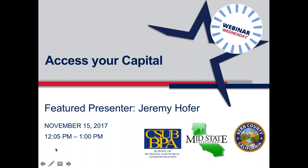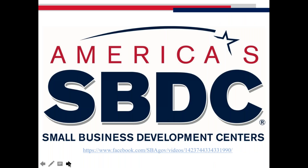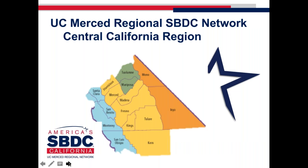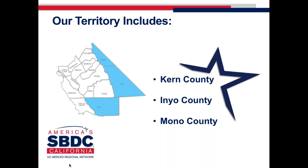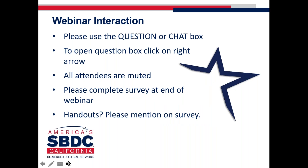A little bit of information before we get to our presentation: the SBDC program is in all 50 states, over a thousand centers strong. In California we have six different regions, and our region is the central California region that provides service to 14 counties from the south part of Kern County to the northern part of Mono, east to the Nevada border, west to the Pacific Ocean. If you're in one of those counties today, welcome. Our territory here at the CSU Bakersfield Center includes Kern, Inyo, and Mono counties.